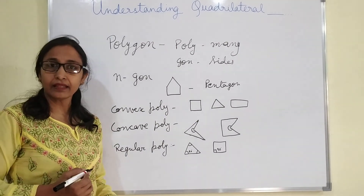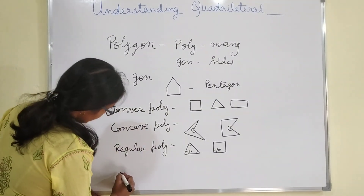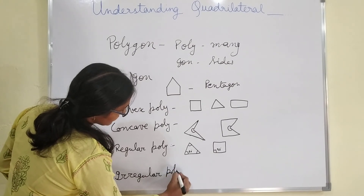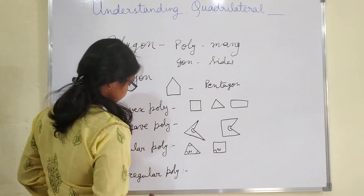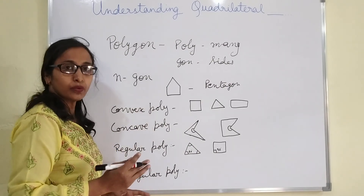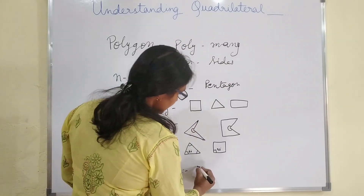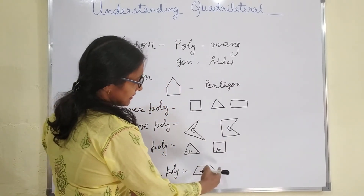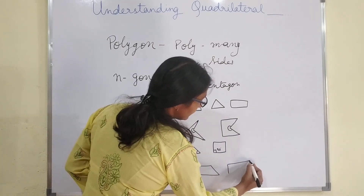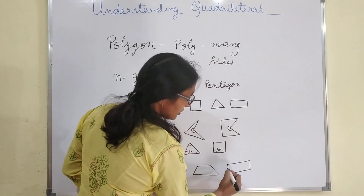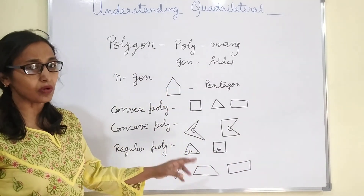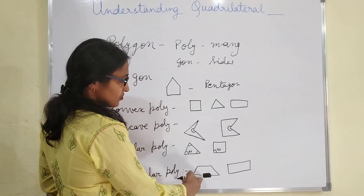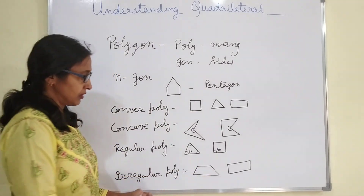The next term is irregular polygon. In an irregular polygon, as the name represents, no sides are equal. For example, a rectangle — the angles are equal but the sides are not equal, so it is an irregular polygon. And a trapezium — all sides are not equal — is also an irregular polygon.